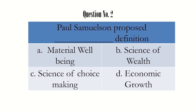The second question is: Paul Samuelson proposed the dash definition. The options given are: A - material well-being, B - science of wealth, C - science of choice making, D - economic growth.